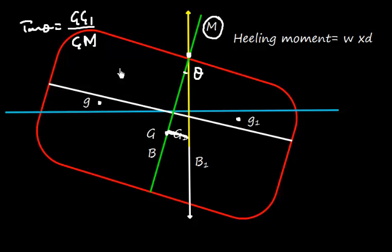Strictly speaking, heel is the transverse inclination due to external force, and list is the transverse inclination due to internal force or internal factor. However, the code uses heel as list, so we will use heeling moment. Angle of heel is directly proportional to GG1, and this is called the heeling arm.